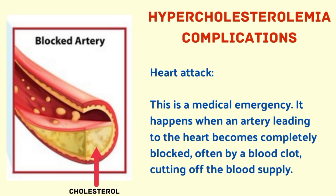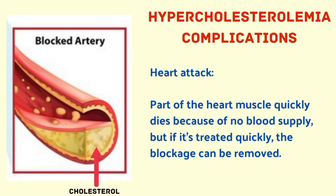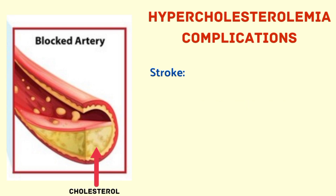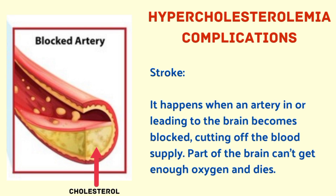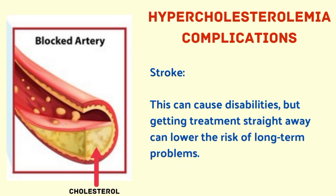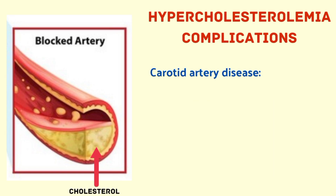The next complication is heart attack, a medical emergency that happens when an artery leading to the heart becomes completely blocked, often by a blood clot, cutting off the blood supply. Part of the heart muscle quickly dies without blood supply, but if treated quickly, the blockage can be removed. Stroke happens when an artery in or leading to the brain becomes blocked, cutting off blood supply. Part of the brain can't get enough oxygen and dies, causing disabilities, but prompt treatment can lower the risk of long-term problems.